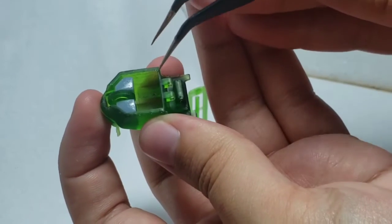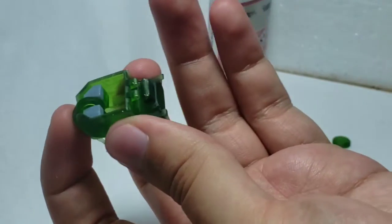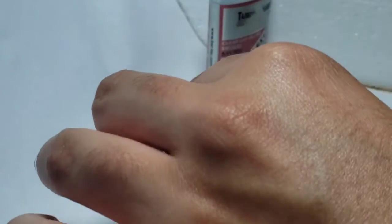This space right here is for counterweights, so it doesn't flip over if you put weights on there. Those are not included, but you put as many in there as you need.